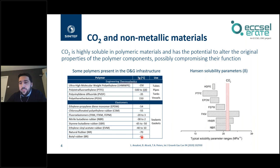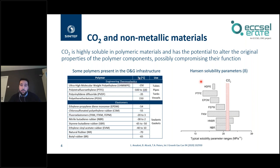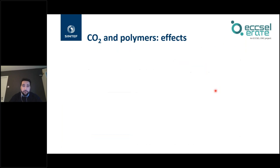Looking at Hansen solubility parameters — a simple way to define how two components interact — CO2 overlaps with quite many elastomers and is close to many thermoplastic materials. This means CO2 will easily solubilize into polymeric materials, leading to several effects. I will give you a picture of what type of effects you can expect when CO2 contacts polymers.